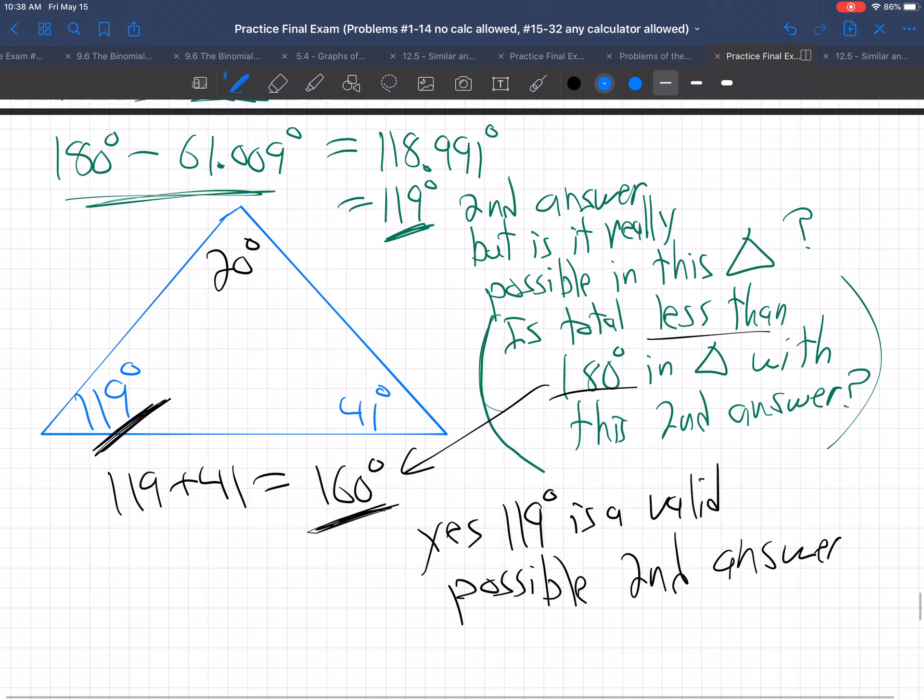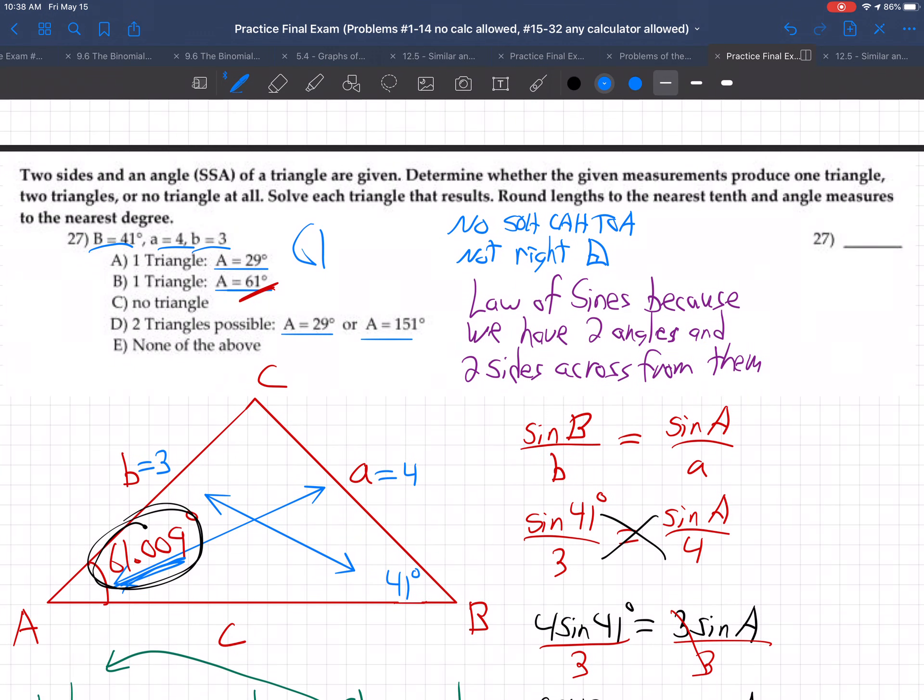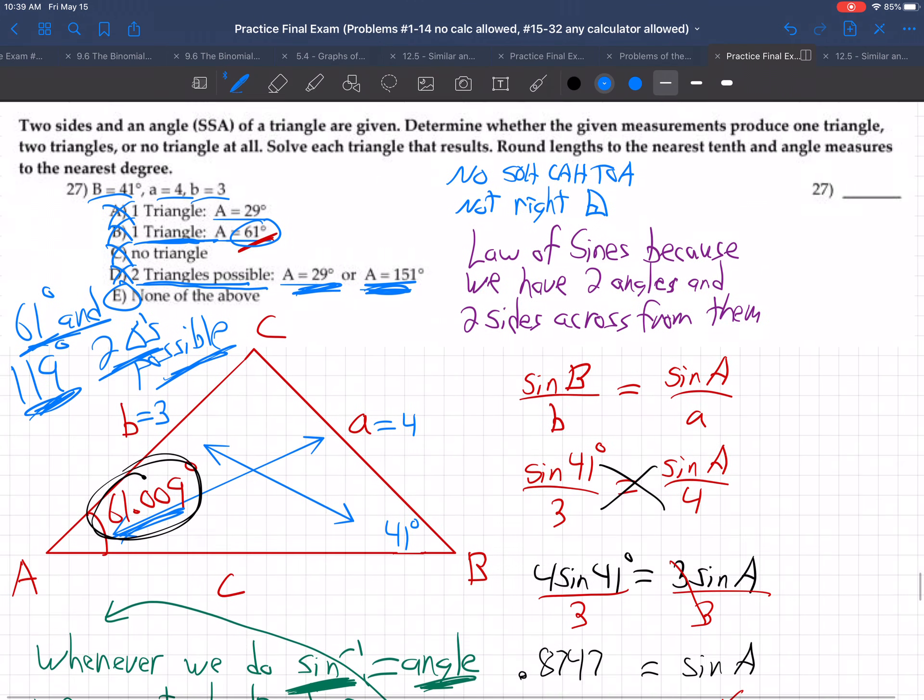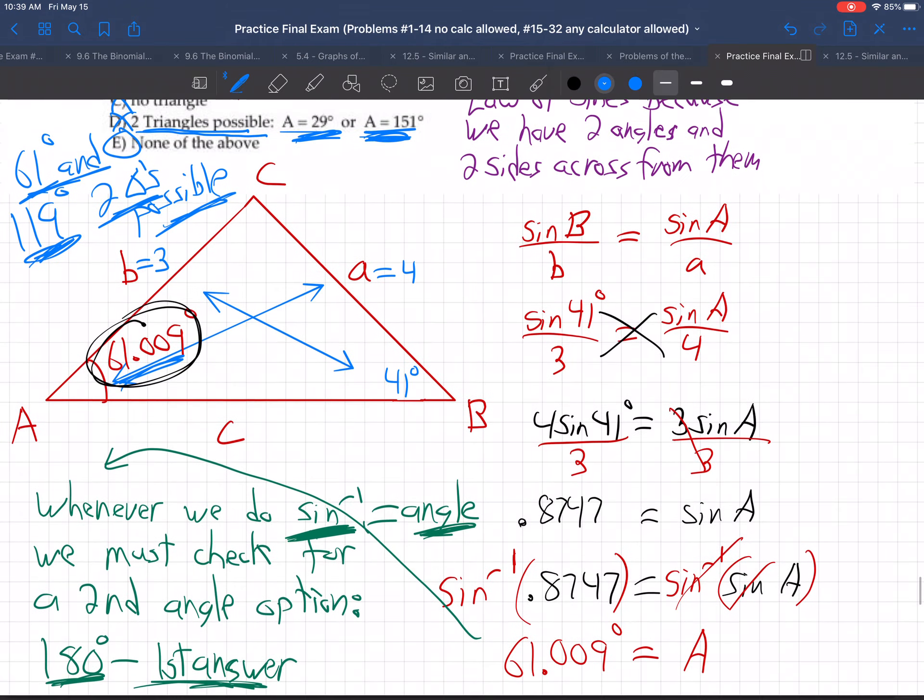So we have two valid answers. They are 61 degrees and 119 degrees. So 61 degrees and 119. There's two possible triangles that would work. Now, here's the two triangles possible, but they got the wrong crazy angles. There's two triangles possible. So it's not one triangle, not no triangle. It's two triangles, but it's not those angles for A. No way. It's none of the above. That's a tricky problem. It's two triangles, but there's 61 and 119, which is not listed there as an option. So that is a tricky problem.